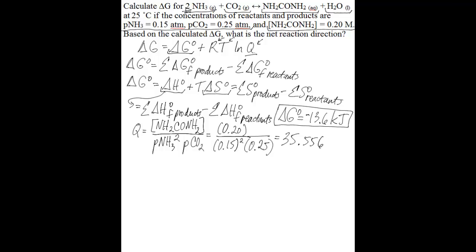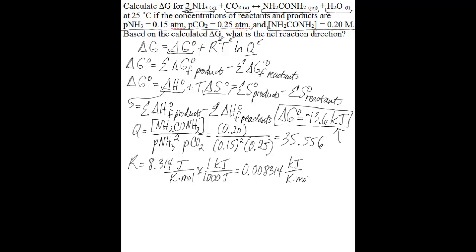Now you also need the ideal gas constant R and the temperature. The ideal gas constant is 8.314 joules per kelvin mole. Since delta G naught is in kilojoules, convert R by multiplying by the conversion factor: 1 kilojoule per 1000 joules, giving 0.008314 kilojoules per kelvin mole. Alternatively, you could convert delta G naught to joules and keep R in joules per kelvin mole — either way, the units must match.